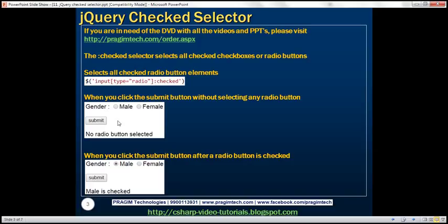Let's design a web page with two radio buttons for gender — male and female — a submit button, and a div element to display the result. When we click the submit button without selecting any radio button, we want to display the message 'no radio button selected.' On the other hand, when we have a radio button selected — in this case, male — and click submit, we want to display 'male is checked.'